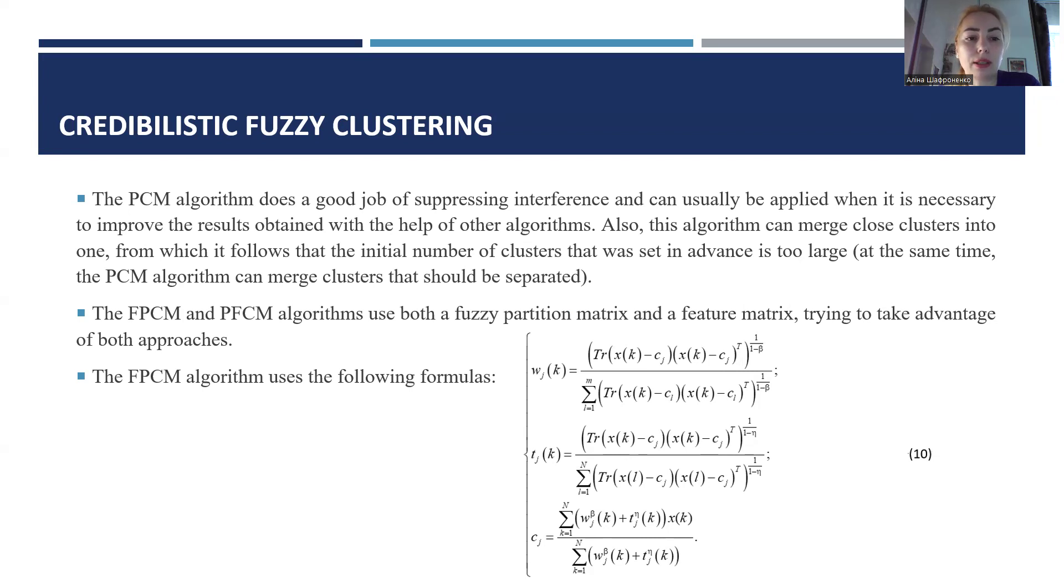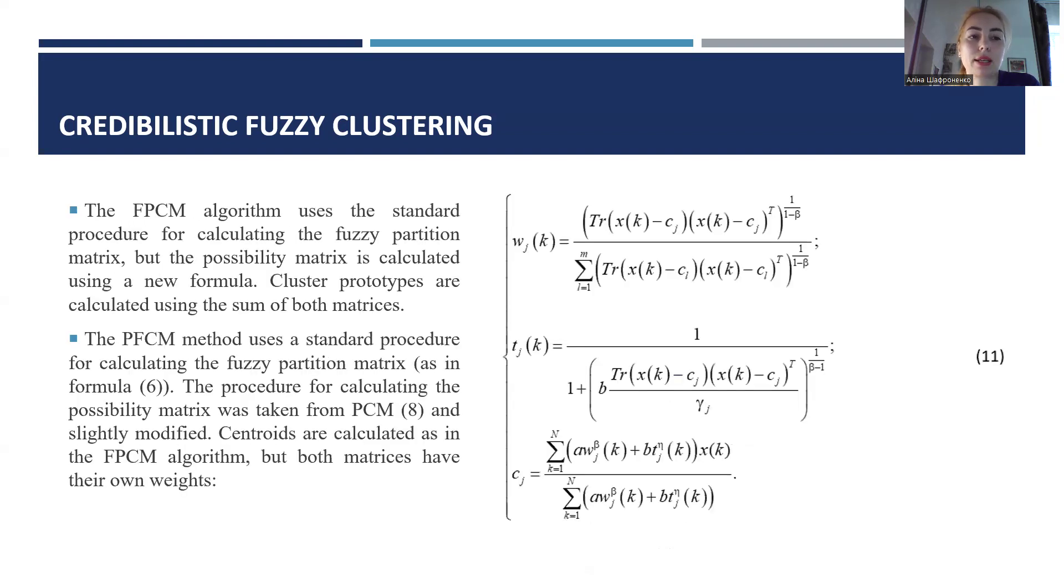The FPCAM algorithm uses both a fuzzy-partitional matrix and feature matrix. Trying to take advantage of both approaches, the FPCAM algorithm uses the following formulas 10. The FPCAM algorithm uses the standard procedures for calculating the fuzzy-partitional matrix, but the possibility matrix is calculated using a new formula. Cluster prototypes are calculated using the sum of both matrices.